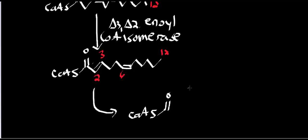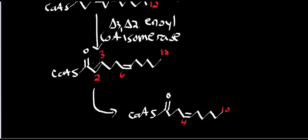If we do beta-oxidation again, we still shorten by two carbons, so this double bond moves to carbon 4 in a 10-carbon chain. We didn't generate an FADH2, but we generated an NADH and an acetyl-CoA.